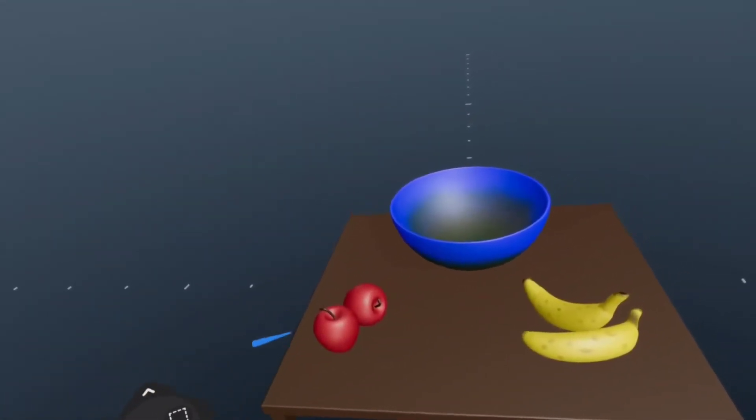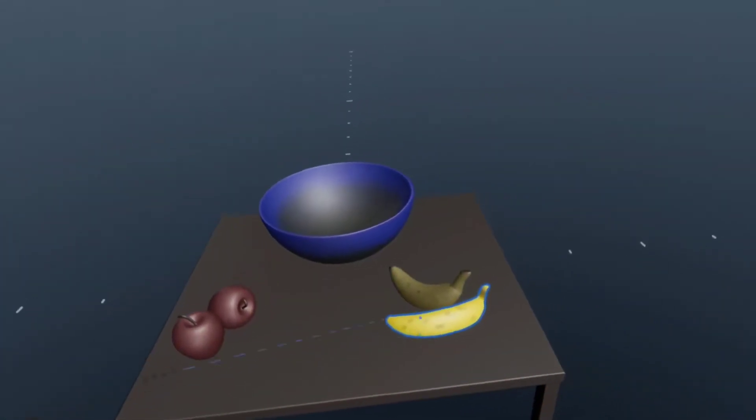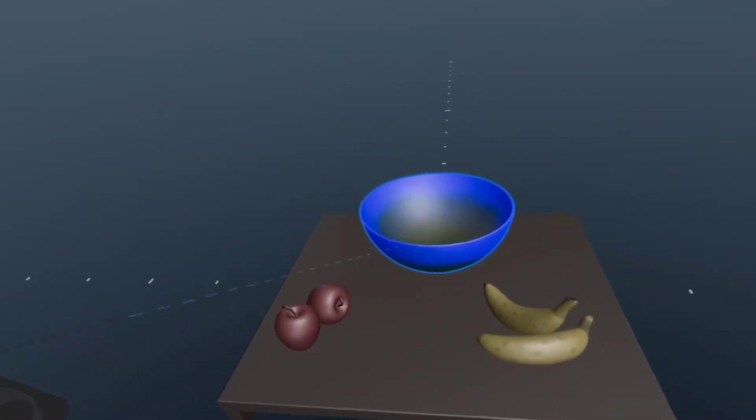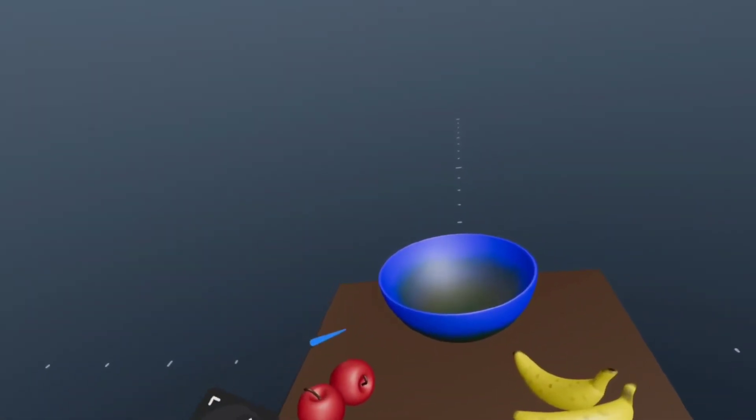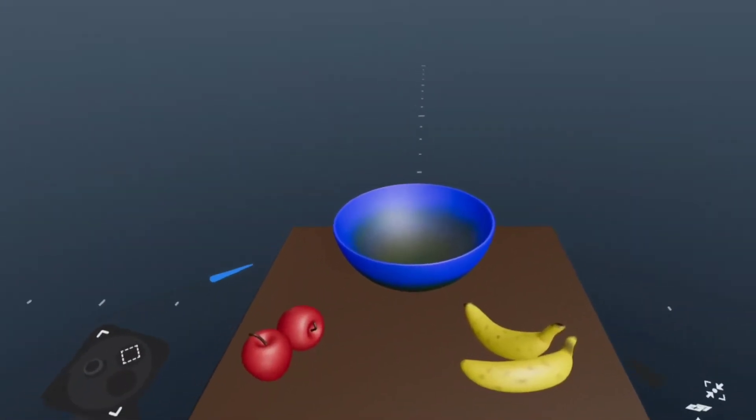So right now, each of these, if you use the up joystick, you can see that each of these is their own separate layer, including the table and the bowl. So let's say that you want to use this bowl with fruit in it, and you want to be able to manipulate it as a single object.